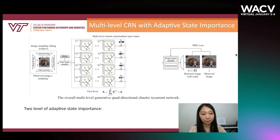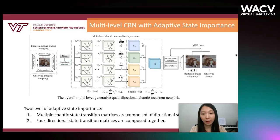Next, we are going to talk about the third part: multilevel CRN with adaptive state importance. In the first level, multi-cubic state transition matrices are composed of directional state transition matrices weighted by the adaptive importance K. In the second level, four-directional state transition matrices are composed together based on their corresponding weight O. The output layer weights and all importance values are jointly optimized by the loss between the output image and the visible ground truth image.